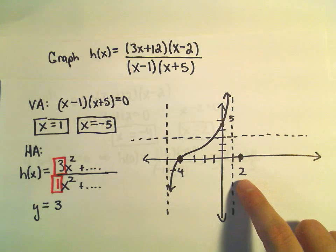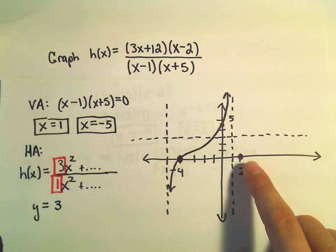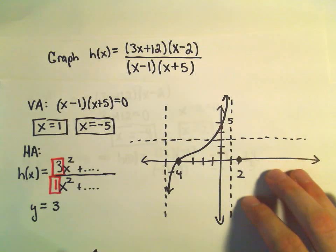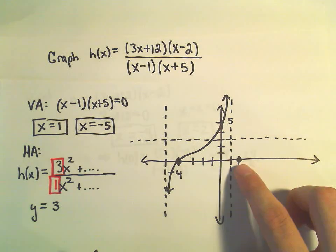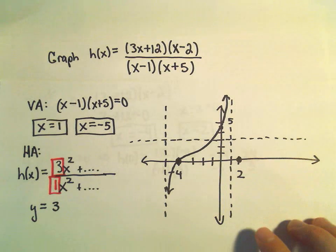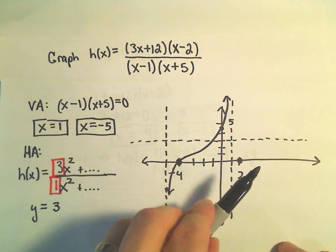I think we can make the same conclusion here when we think about sort of what's going on in the bottom right portion of the graph. I know that x equals 2. That's one of my x-intercepts.